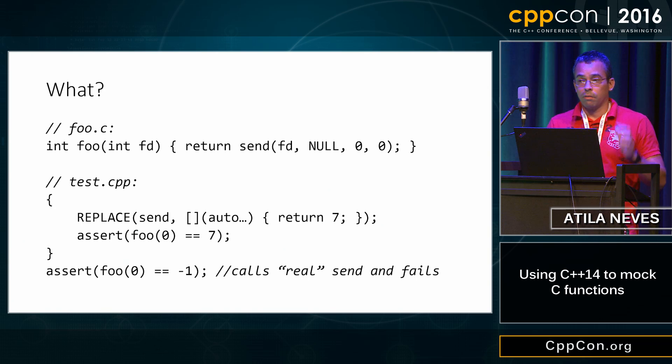Now in your test file, you're gonna have a block there. The block's there on purpose because of RAII and that's because if you use the replace macro from my library, you can say replace send and then replace it with this lambda until the end of scope but only until then.